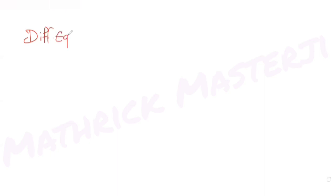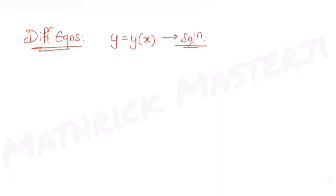Hi guys! I hope you are all doing well. Let's see today's question. Today's question is from the topic of differential equations. The question tells us that if y equals y of x is a solution of the differential equation: 2x² dy/dx minus 2xy plus 3y² equals 0.